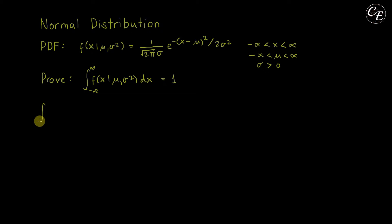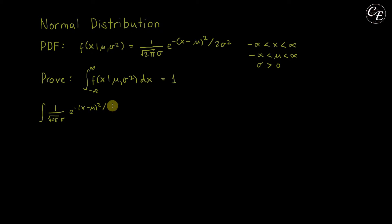The integral of the probability density function is: e raised to negative (x minus mu) squared over 2 sigma squared, dx, from negative infinity to positive infinity.